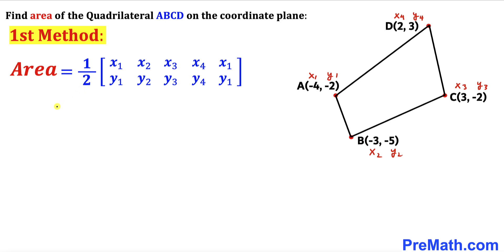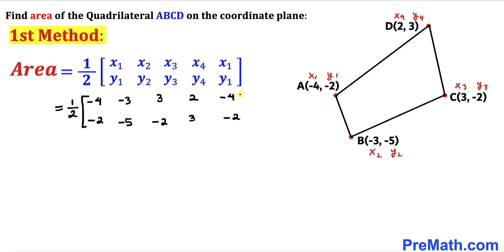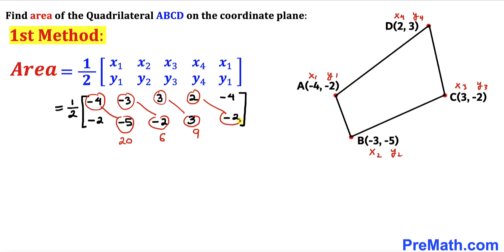Let's fill in the formula. The area equals 1/2 times the matrix with entries: (-4, -2), (-3, -5), (3, -2), (2, 3), and finally (-4, -2) again. Now let's multiply diagonally: -4 times -5 gives +20, -3 times -2 gives +6, 3 times 3 gives 9, and 2 times -2 gives -4.